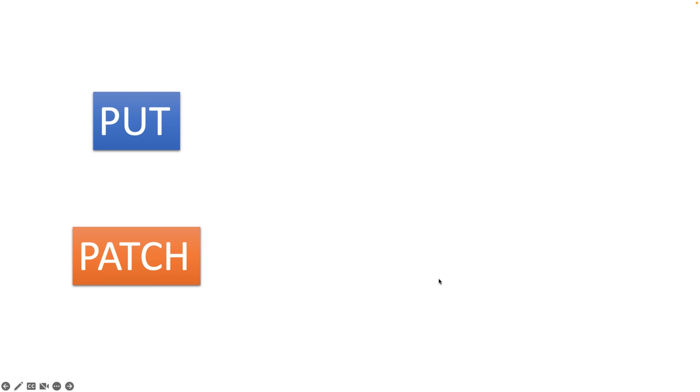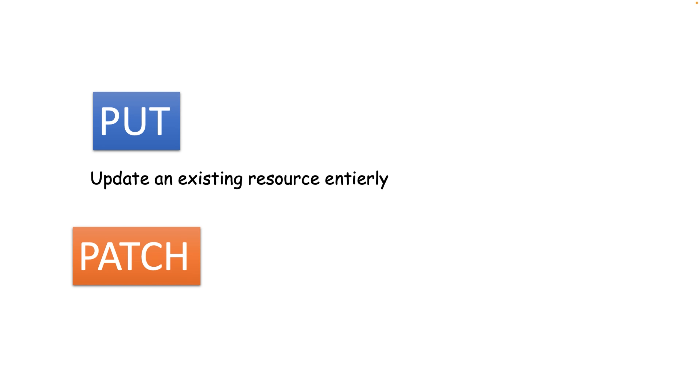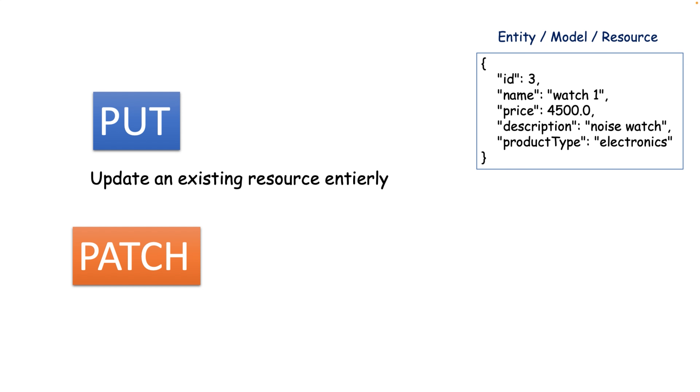Theoretically, there are two types of HTTP methods to update an existing resource: PUT and PATCH. You might ask why there are two different HTTP methods to perform the same kind of operation. You can go for the PUT HTTP method — it's always recommended if you want to update all the fields of your model or entity. Let's say you have a product object and you want to update each and every field of that object, then you can go for the PUT HTTP method.